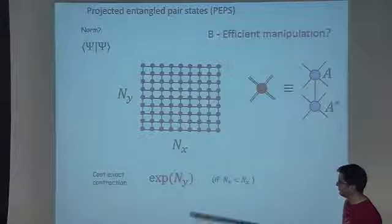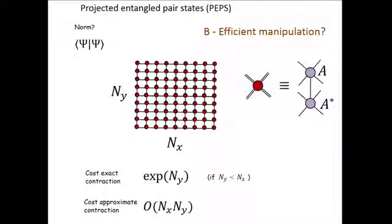If they give you a PEPS and you want to compute the norm a priori, you will not be able to do that efficiently. But it turns out that if you've used this PEPS to encode the ground state of a local Hamiltonian, locality kicks in. There are some - not rigorous, but in practice well-experienced - facts that say you can contract this approximately. We won't be able to extract this number exactly, but we have approximation schemes which are efficient.